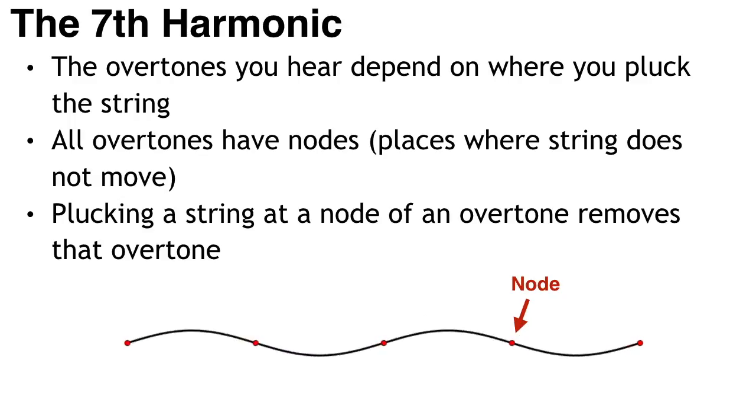All overtones have nodes, that is places where the string does not move at all. If you pluck a string at the node of a particular overtone, then that overtone will not be heard, precisely because the part of the string that should be still is not still.